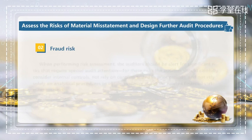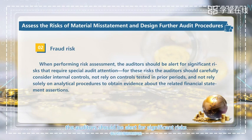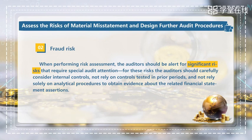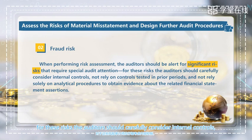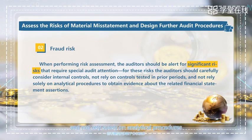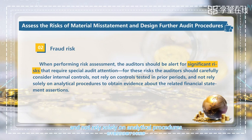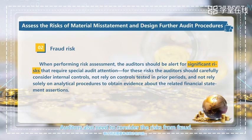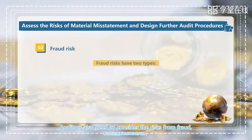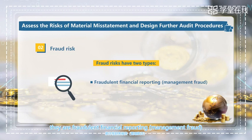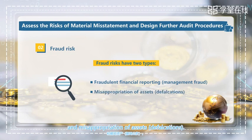Now let's look at fraud risk. When performing risk assessment, the auditor should be alert for significant risks that require special audit attention. For such risks, the auditor should carefully consider internal controls, not rely on controls tested in prior periods, and not rely solely on analytic procedures to obtain evidence about the related financial statement assertions. Auditors also need to consider the risk from fraud. There are usually two types of fraud risks: fraudulent financial reporting, also called management fraud, and misappropriation of assets, also called defalcations.